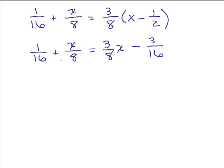So now we look at this and decide what the least common denominator is. We've got 16, 8, 8, 16. 16 is the least common denominator. So what we're going to do is multiply both sides of the equation by 16.